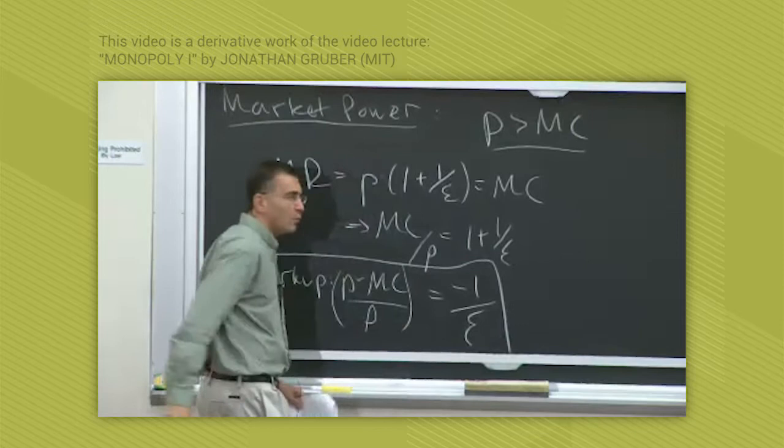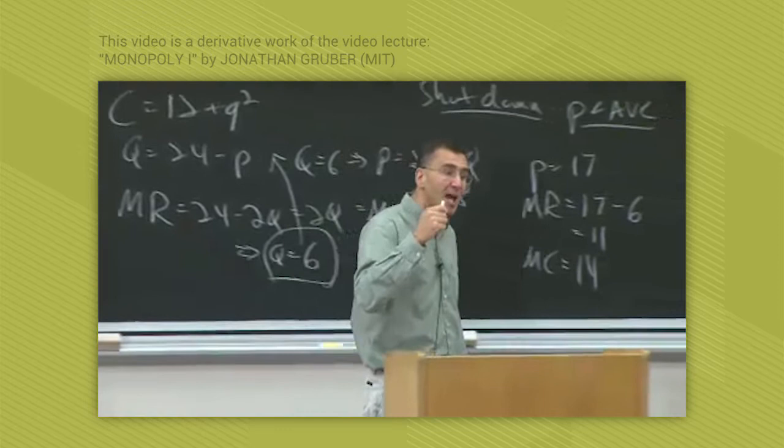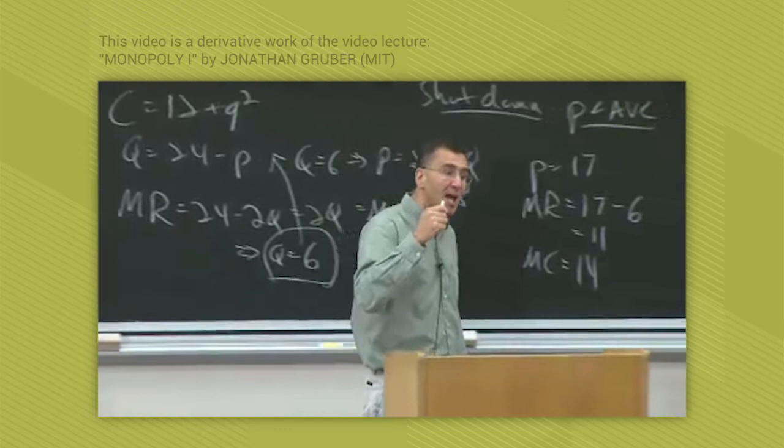So the markup for a monopoly firm equals minus 1 over epsilon. This comes to the question before about the insulin example, sort of confusing. Here we see your intuition on insulin. The lower the elasticity, the more the monopolist can markup their price.